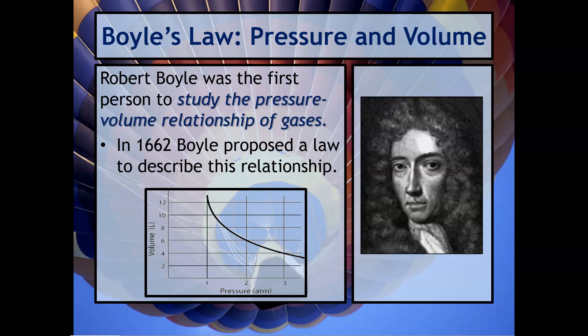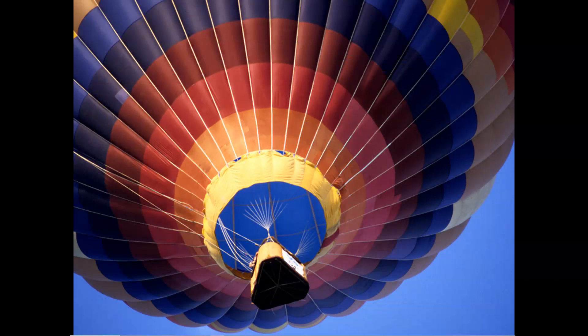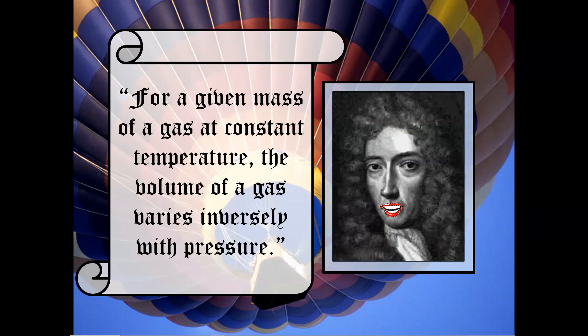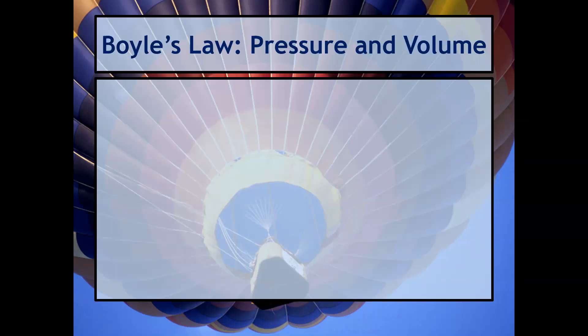You want to pay attention to what type of relationship is represented between pressure and volume of a gas. Notice pressure is going to increase as you go more to the right, volume decreases as you go down. So you want to think about what's the relationship between pressure and volume if one thing is going up and the other thing is going down. Robert Boyle says for a given mass of a gas at constant temperature, the volume of the gas varies inversely with pressure.